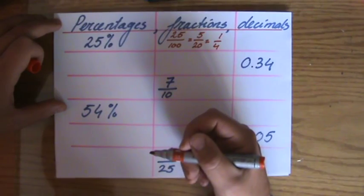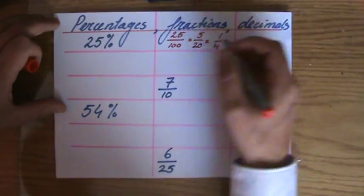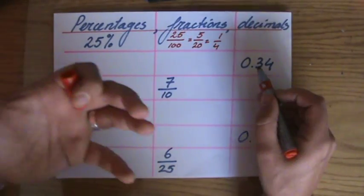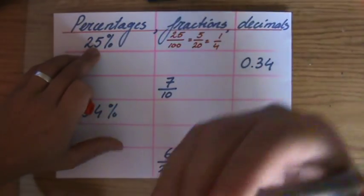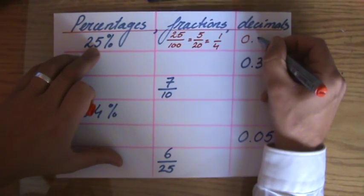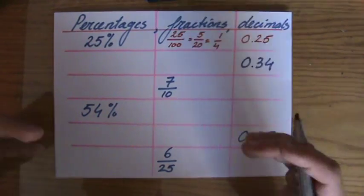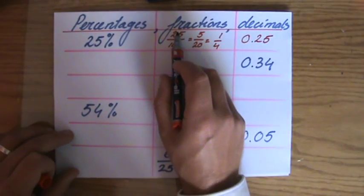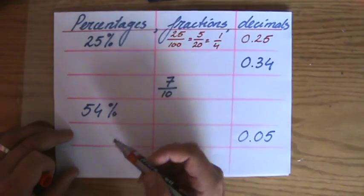What is that as a decimal? A decimal has a particular place value — you have tens, hundreds — and this is 25 out of a hundred, so those are 25 hundredths: 0.25, which is a quarter. You can see here: 25 hundredths.